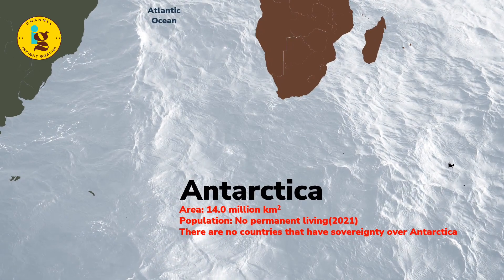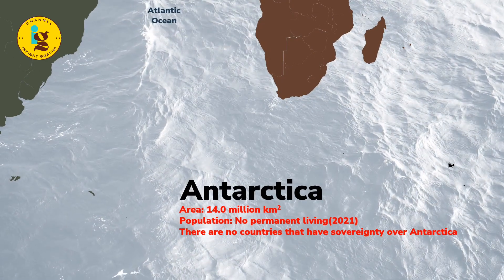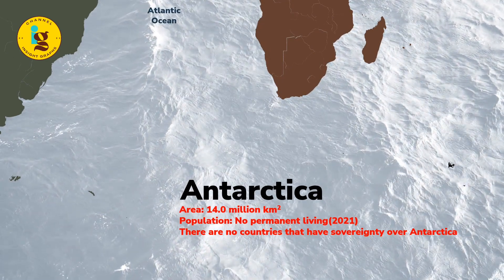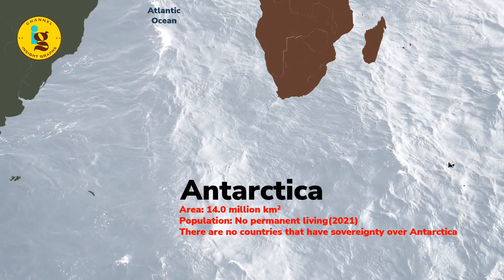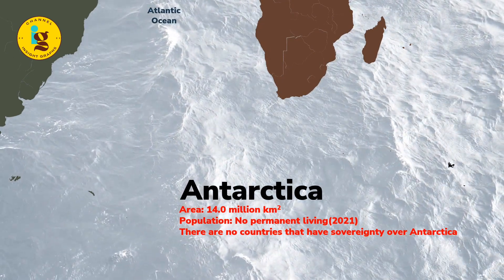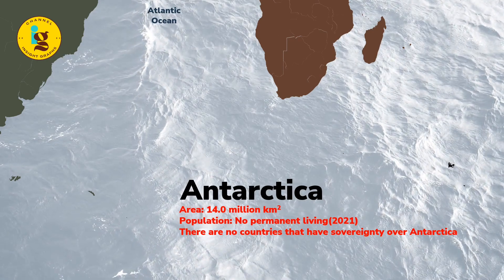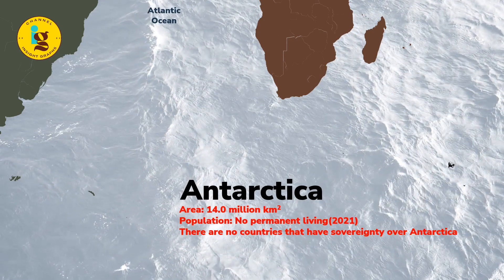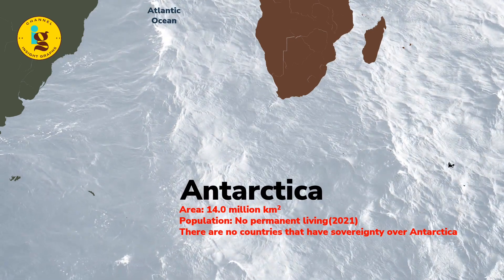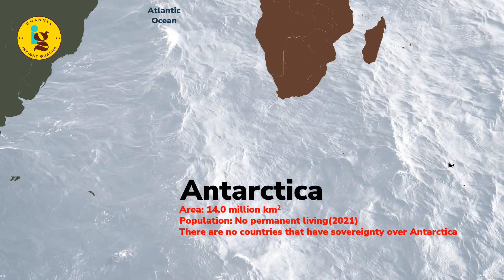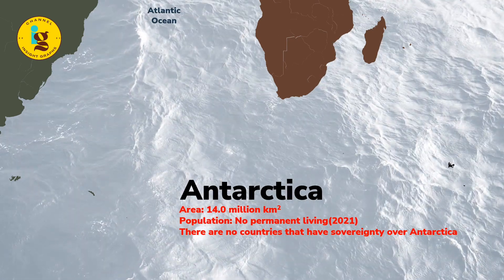Antarctica is the fifth largest continent on earth, covering approximately 14.0 million square kilometers. It is located primarily in the southern hemisphere and is covered in ice and snow.